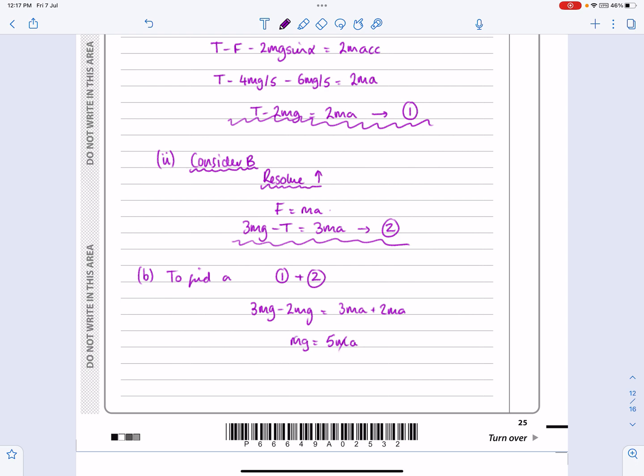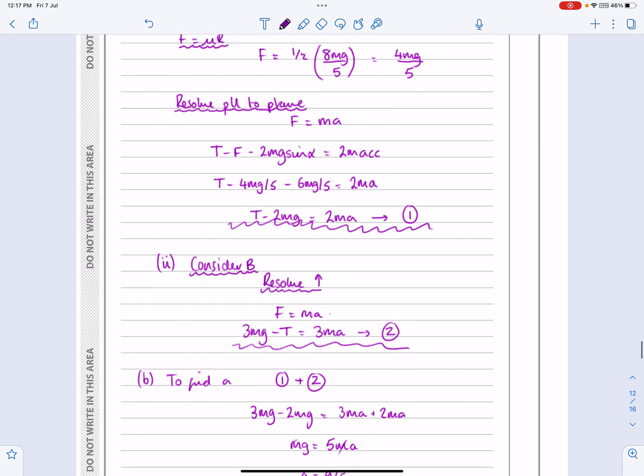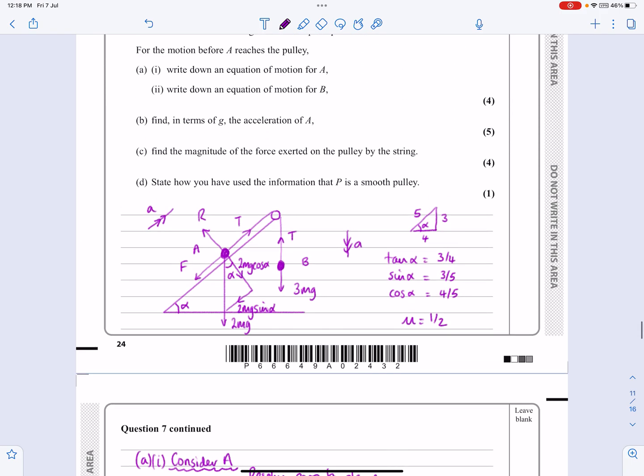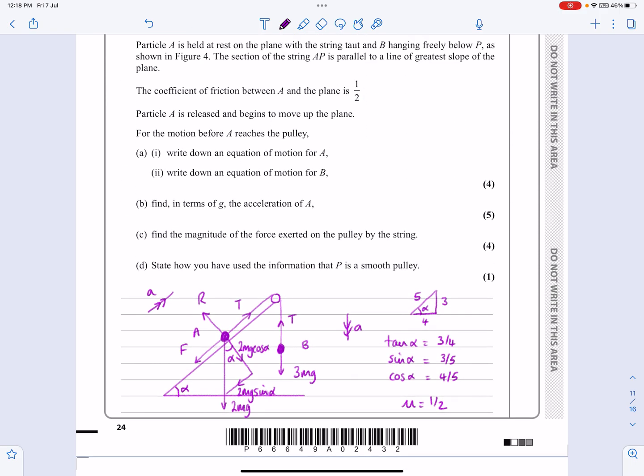So I get mg equals 5ma. Cancel out the m's obviously. a is going to work out to be equal to g over 5 here. So as we're looking through, nice neat answer for part b there. So I've done four marks. I've done the five marks there.